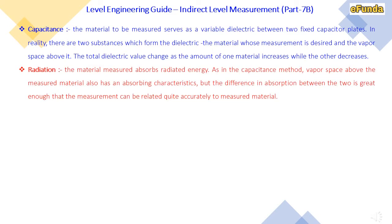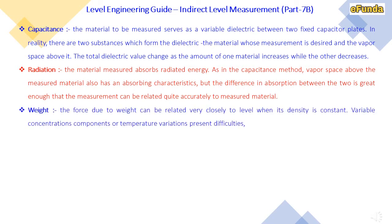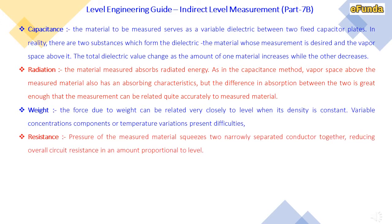Radiation: the measured material absorbs the radiation energy. Similar to the capacitance method, the vapour space above the measured material also has absorbing characteristics, but the difference in absorption between the two is great enough that the measurement can be related quite accurately to the measured material. Weight: the force due to weight can be related closely to level when density is constant, though variable concentration or temperature variations present difficulties. Resistance: the pressure of the measured material squeezes two narrowly separated conductors together, reducing the overall circuit resistance in an amount proportional to the level.